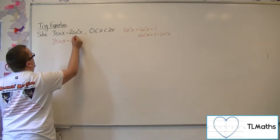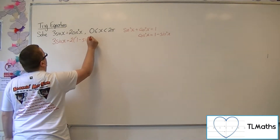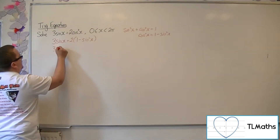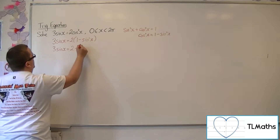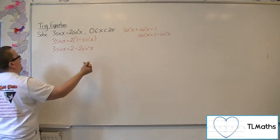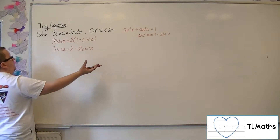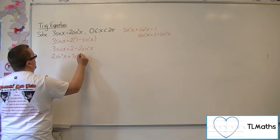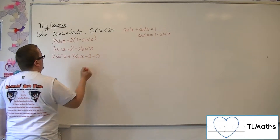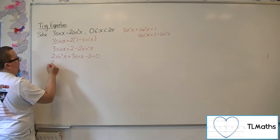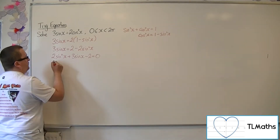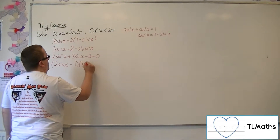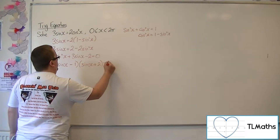So 3 sine x is 2 lots of 1 minus sine squared x. If we expand the right-hand side, we can then rearrange this to get everything onto the left-hand side of the equation. We can then factorise this quadratic in sine, so that's 2 sine x minus 1 times sine x plus 2 equals 0.